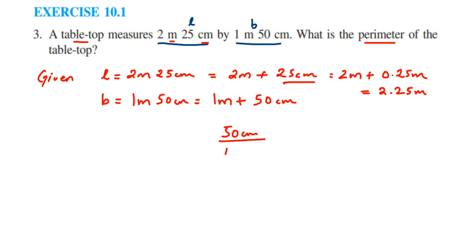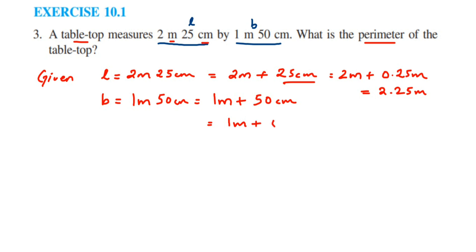Converting 50 centimeter into meter: divide by 100, which gives 0.50. So breadth equals 1 meter plus 0.50 meter, which is 1.50 meter, or simply 1.5 meter. We have now converted both length and breadth into meters.